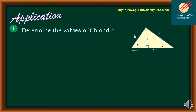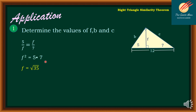For the application of the Right Triangle Similarity Theorem, let's look at the illustration on the right side. We have side 12 and sides B and C. Let's determine the values of F, B, and C. F is the geometric mean between 5 and 7. So F squared equals 5 times 7, and F equals the square root of 35.